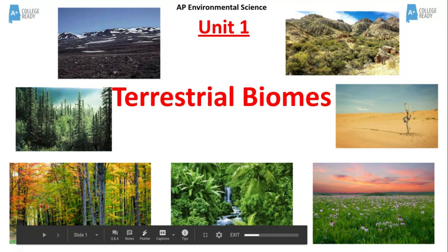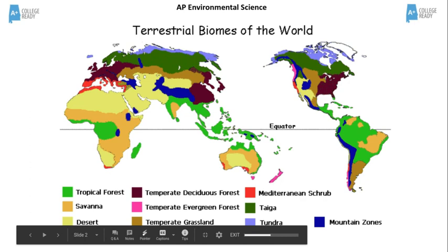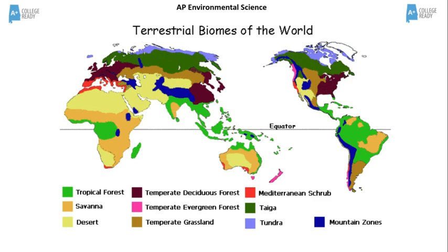There are many different types of terrestrial biomes as shown in this graphic. The green areas represent tropical rainforests. The orange areas are savannas. The yellow areas are deserts. The dark brown areas are deciduous forests. The pink areas are evergreen forests. The tan areas are grasslands. The red areas are shrublands. The dark green areas are the taiga. The light blue are the tundra. And the dark blue areas represent mountain zones.